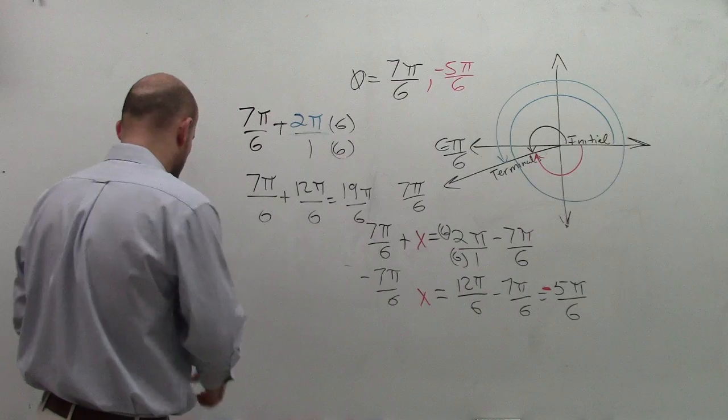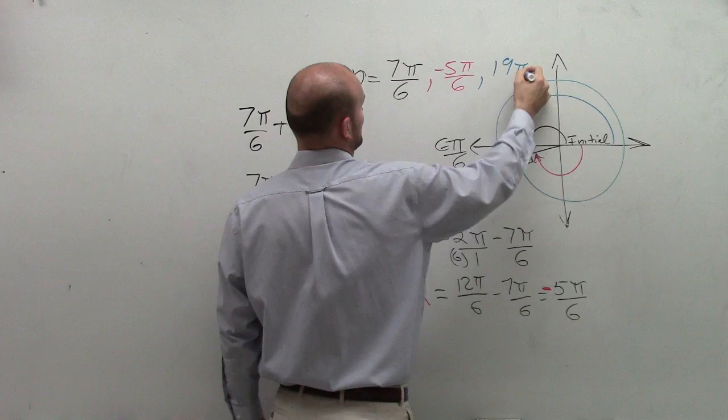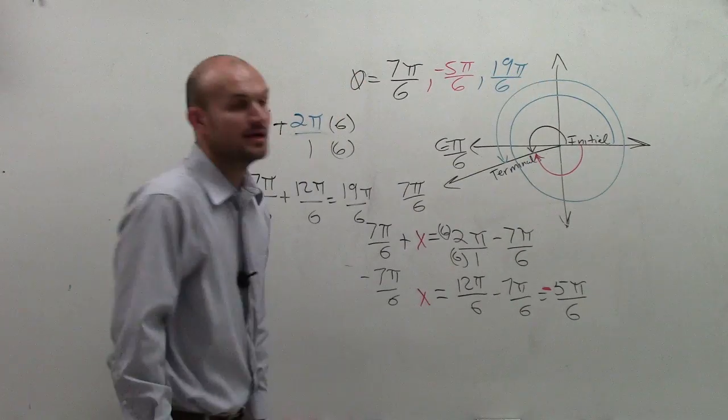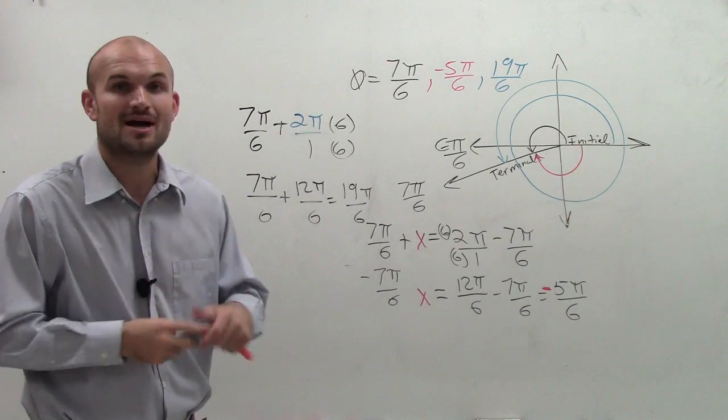So ladies and gentlemen, my third angle, or my third coterminal angle, which is going to be 19π over 6. So there you go, ladies and gentlemen. I hope you all understand now how to do coterminal angles, and I hope this helps you out. Thanks.